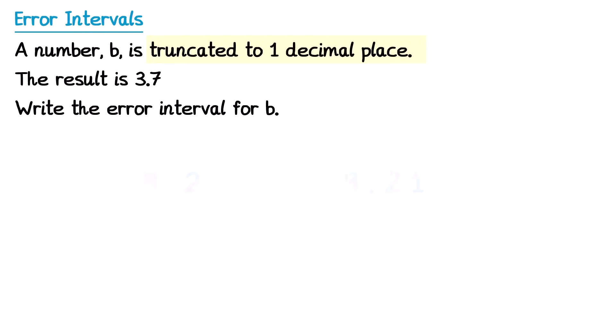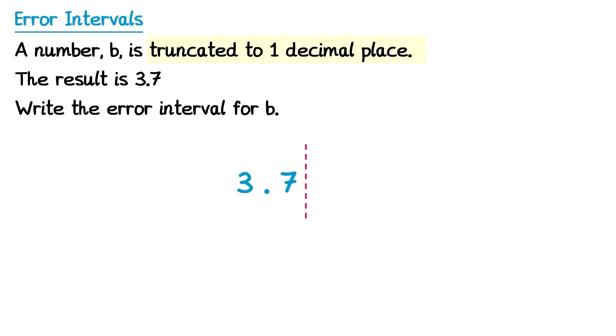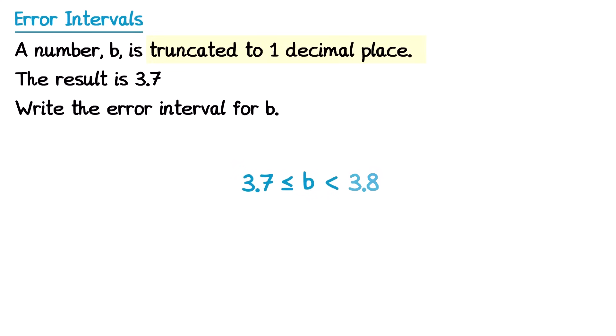So how does this affect our error interval? Well if we truncated a number to one decimal place and we got 3.7, it means we chopped it there. This means we could put anything after the red line — it could be 372, just an 8, 1147, 9999999, or even nothing. It wouldn't matter because anything after that point disappears when we truncate. So the lowest possible number is 3.7, and we could have anything as long as we don't go up to 3.8. For the error interval we write b, the inequality signs, then 3.7 all the way up to 3.8.